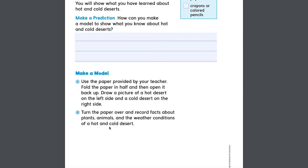Then turn the paper over and record facts about plants, animals, and the weather conditions of a hot and cold desert. You can list some of the animals you would find in a hot desert and some of the animals in a cold desert, then some of the plants you would find, and how the weather is. Since they're both deserts, they are dry.